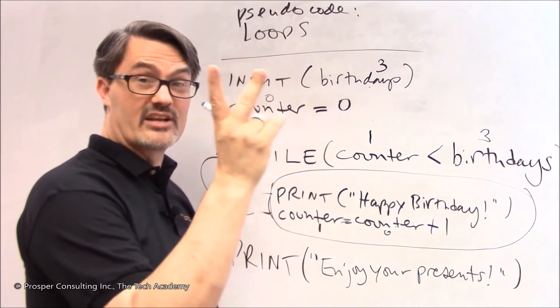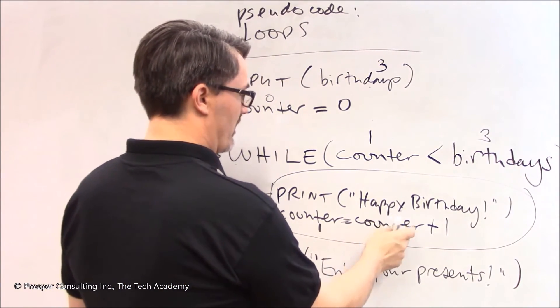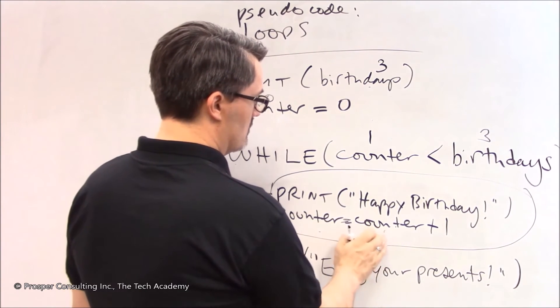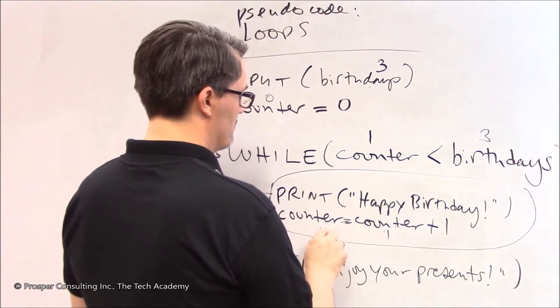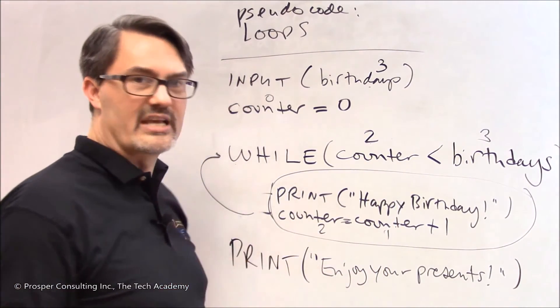So it executes it again. It prints on the screen happy birthday. Now I've got happy birthday twice. And then it makes counter equal to its current value plus one. Well its current value is one. Add one is two. So now counter is equal to two. And remember the computer keeps track of all this.